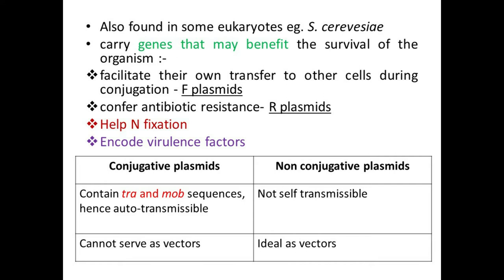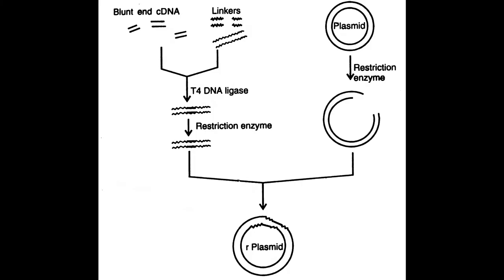We prefer non-conjugative plasmids as ideal vectors. We do not use conjugative plasmids as vectors because beyond our control they may pass to other cells — we cannot allow that, since we are using them only as a vehicle for carrying foreign DNA to a host cell. The most important point is that we use a plasmid as a vector when we want to carry a foreign gene into a bacterial host cell.